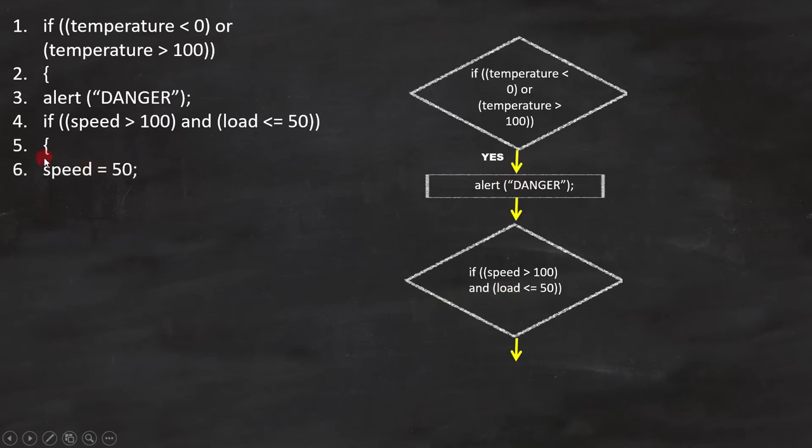Now let's move to line number 5 and 6. Line 6 is speed equals to 50. Since it is a statement, we can put it here. Now let's analyze line number 7.